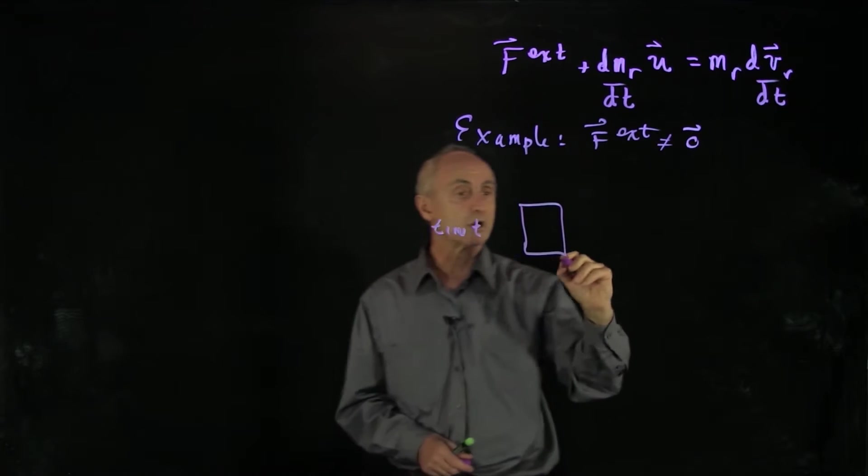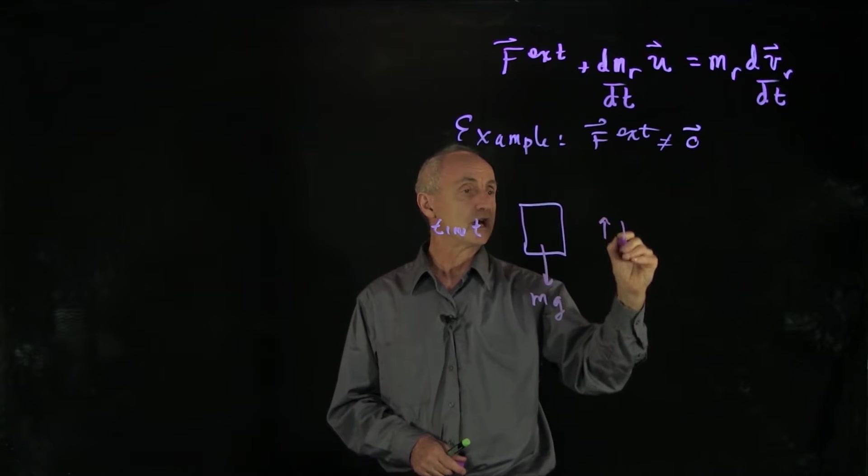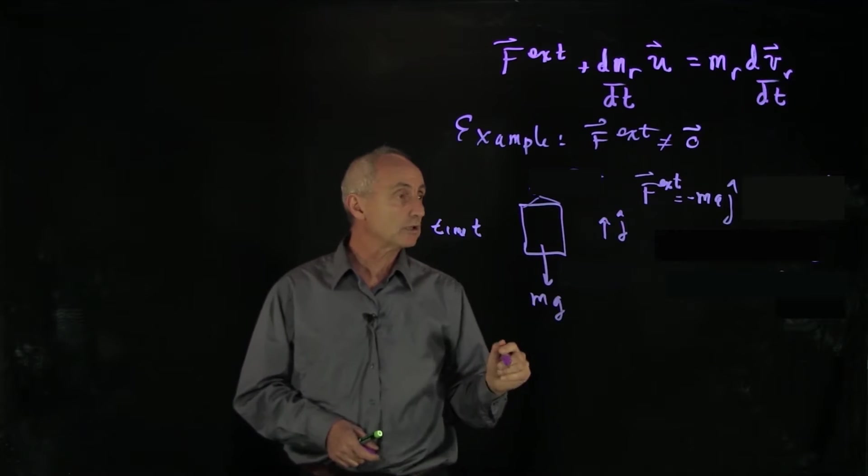We have a gravitational force, mg. So we're going to choose j hat up. So now what does our rocket equation look like?